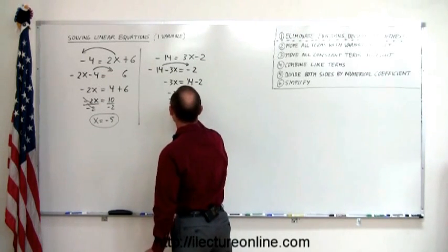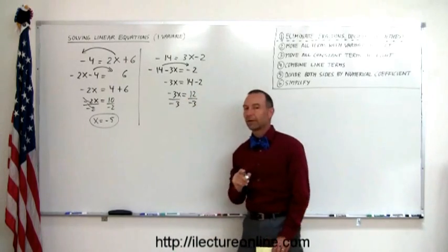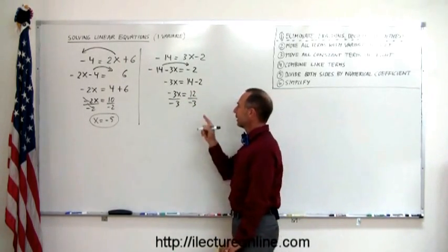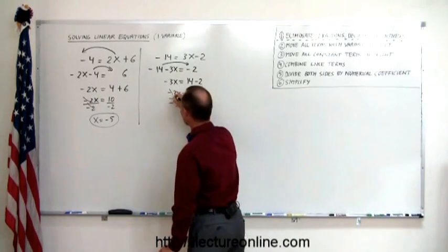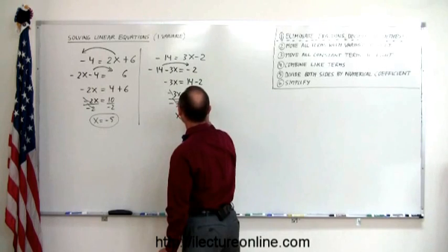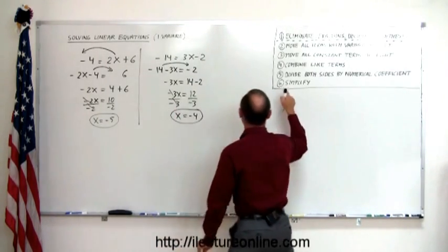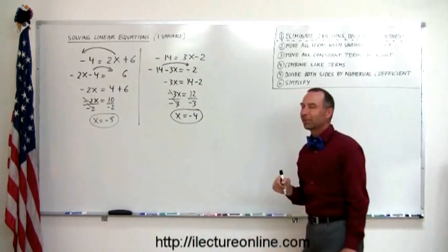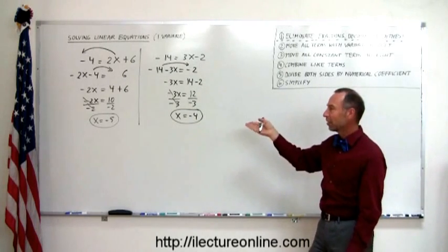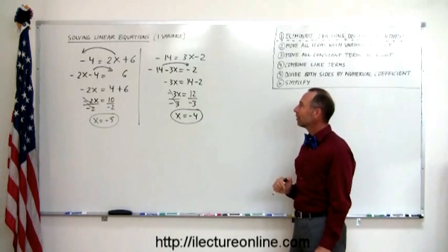We divide both sides by the numerical coefficient in front of x, which is negative 3. Divide both sides by negative 3 — this cancels out — so x equals 12 divided by negative 3, which is negative 4. There is a sixth step to simplify, but in this case there's nothing to be simplified.